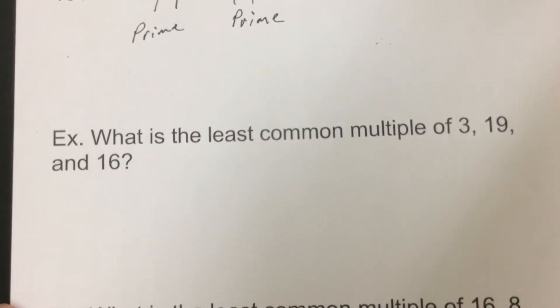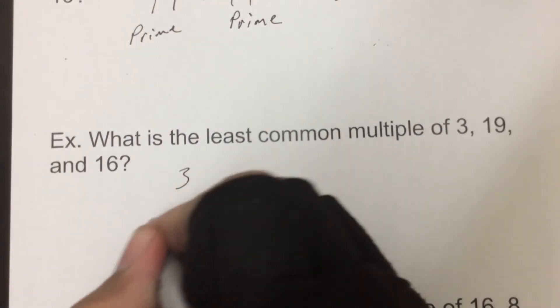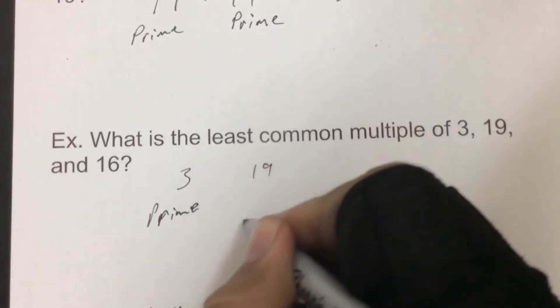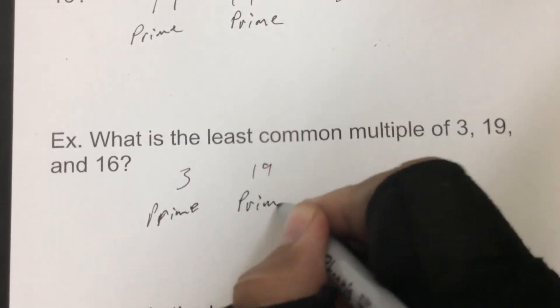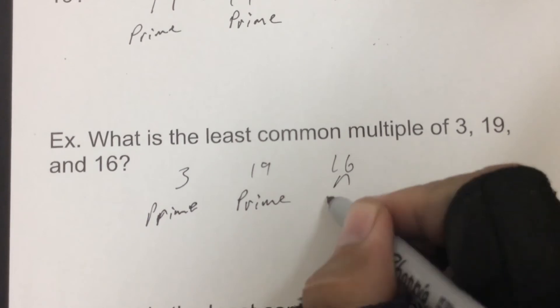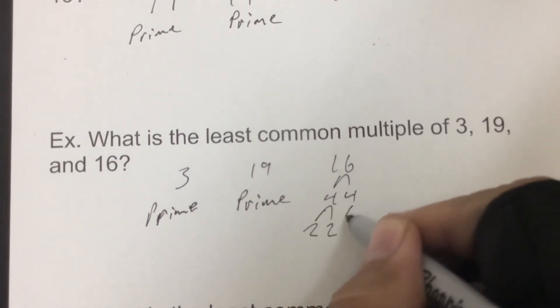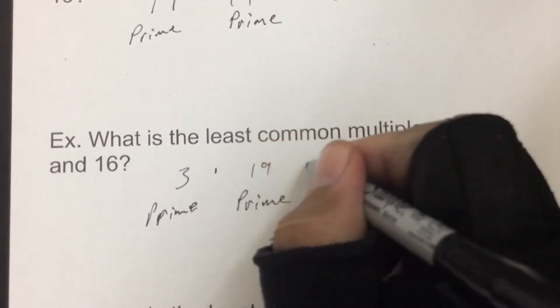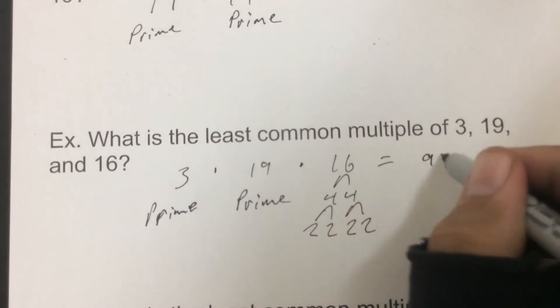So if we look at this one here, again, 3 is prime, 19 also prime, but 16 here we could break down to 4 and 4, and 2 and 2. Now the only reason why we break this down is we still need to look because maybe 3 or 19 would be a multiple of this other one and then we would have something in common. However, when it breaks down, all we get are 2's, doesn't match up with the 3 or 19. So again, we would multiply these and you would end up with 912.